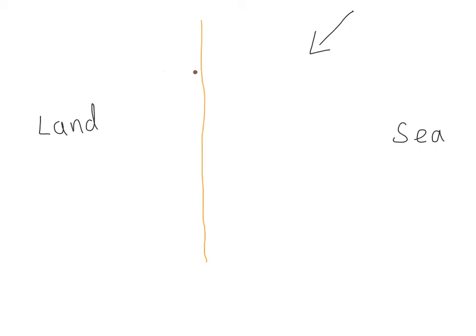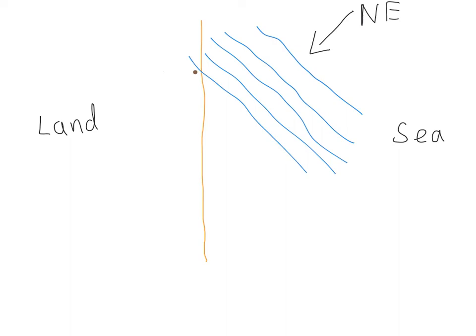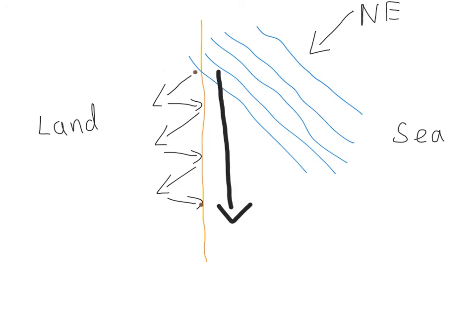Well, quite simply, the prevailing wind is from the northeast and it will cause the swash of the waves coming in at an angle to move the pebble at an angle up the beach and back down, up and back down in the zigzag fashion, so that eventually the pebble will end up further down the beach. So longshore drift in this case is from north to south.